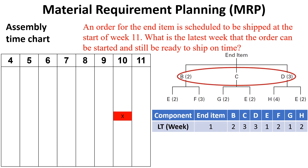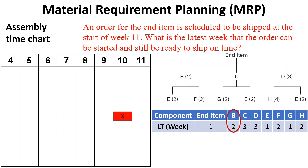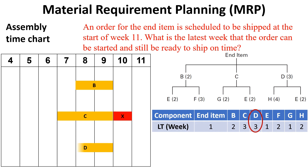The next level in the product tree tells us that the three subassemblies B, C, and D are required for the end item assembly. The lead time for subassembly B is two weeks, so going backward from the start of week 10 by two weeks means that the assembly of subassembly B must start at the beginning of week 8. The lead time for item C is three weeks, so assembly of subassembly C must start at the beginning of week 7. The lead time for subassembly D is also three weeks, so assembly of subassembly D must start at the beginning of week 7.